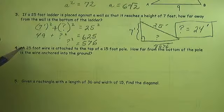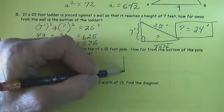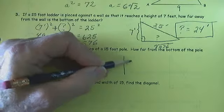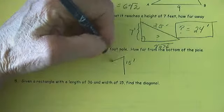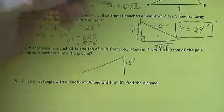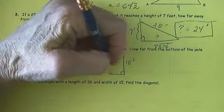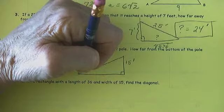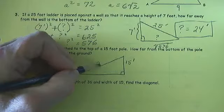A 25-foot wire is attached to the top of a 15-foot pole. We have a 15-foot pole and we have a 25-foot wire. I'm just going to pretend that my 15-foot pole is at right angles to the ground, because otherwise I don't really know how to solve the problem.